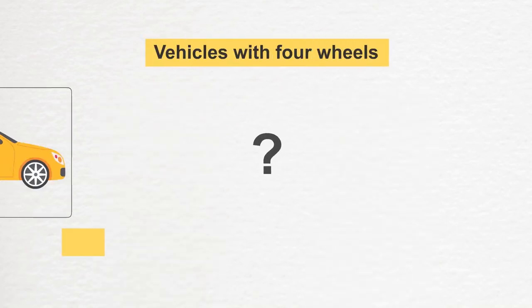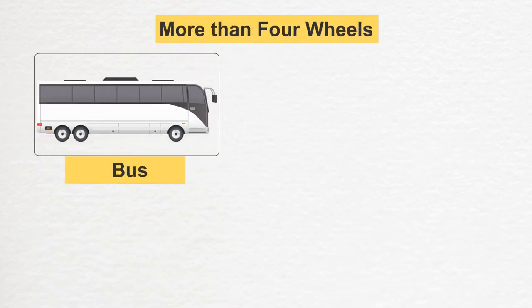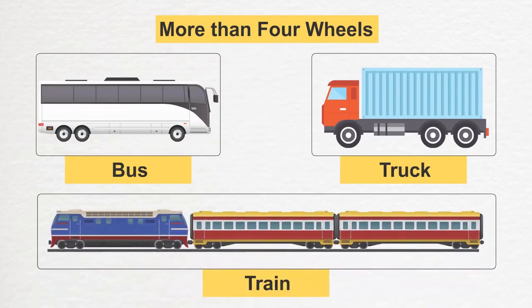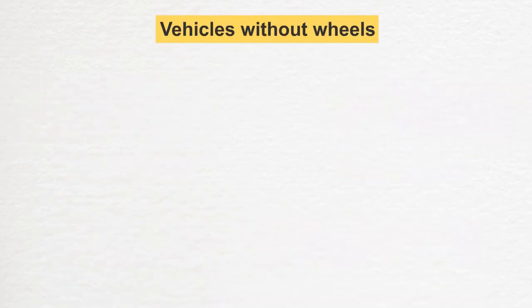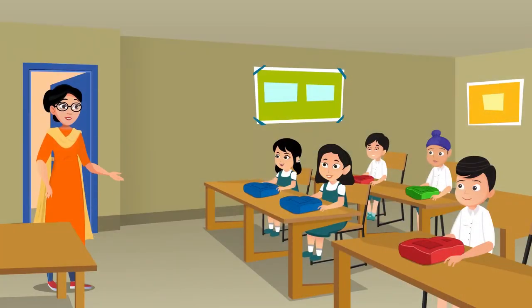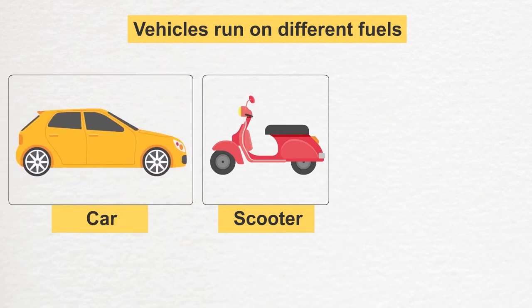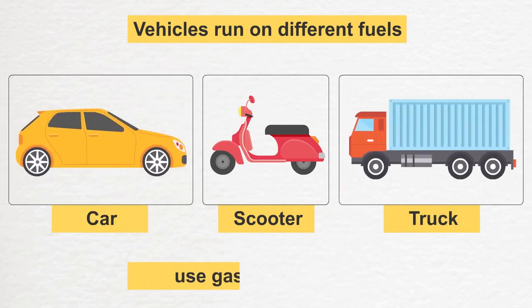The teacher asked students to name vehicles by number of wheels. Two-wheeled: cycle, scooter. Three-wheeled: rickshaw, auto. Four-wheeled: car, bullock cart. More than four wheels: bus, truck, train. The teacher then asked: do we also have vehicles without wheels? A student answered: a boat! Absolutely right — the boat floats on water and does not have any wheels.